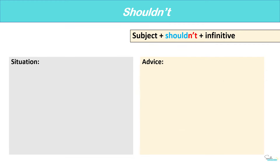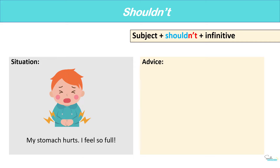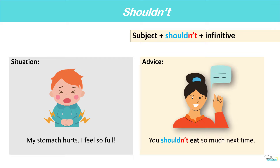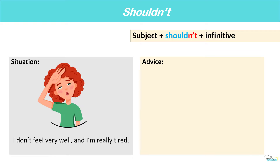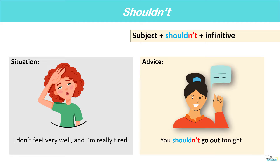Now let's look at these situation examples and give advice using shouldn't. 'My stomach hurts — I feel so full.' You shouldn't eat so much next time. 'I don't feel very well and I'm really tired.' You shouldn't go out tonight.